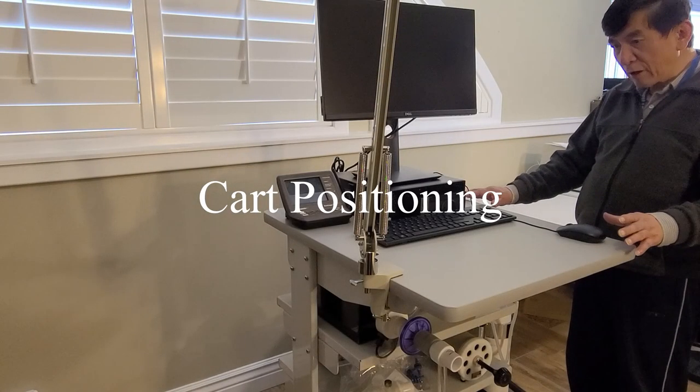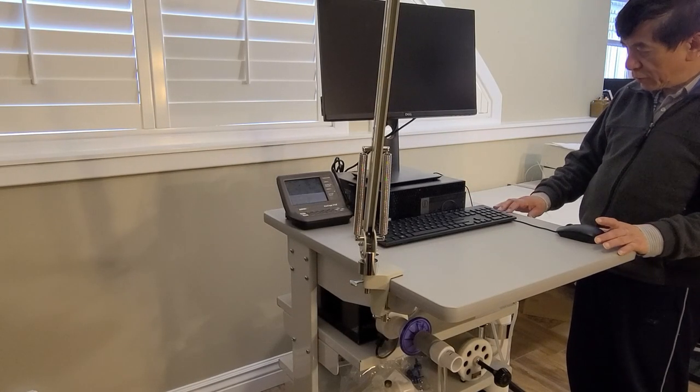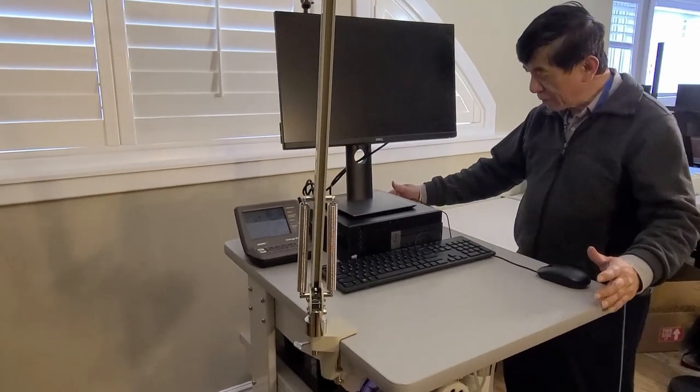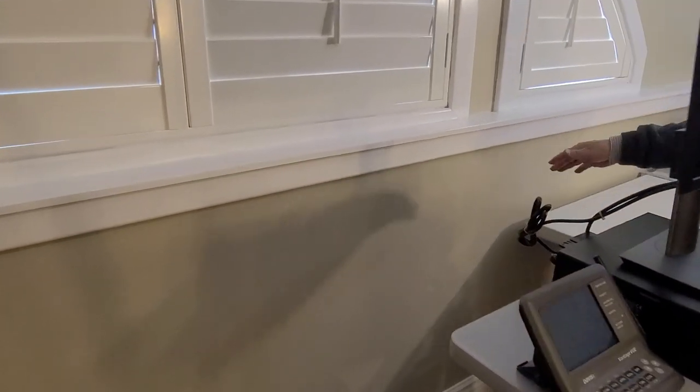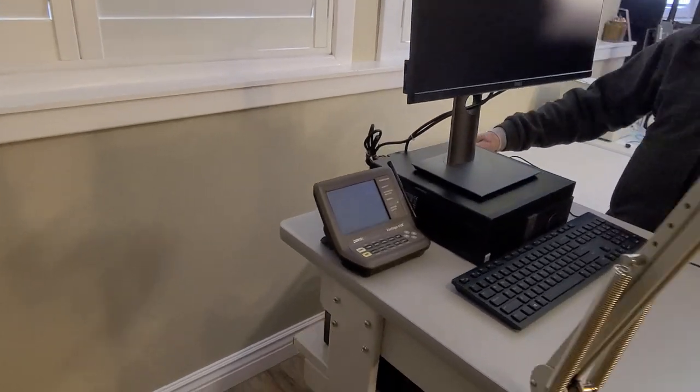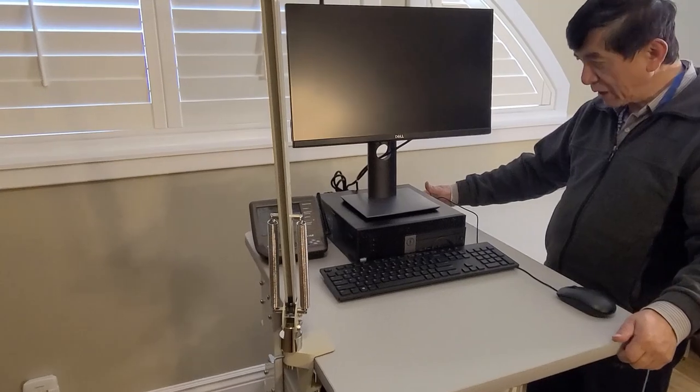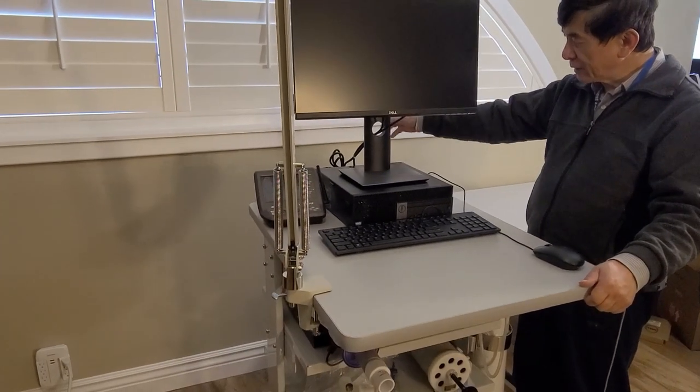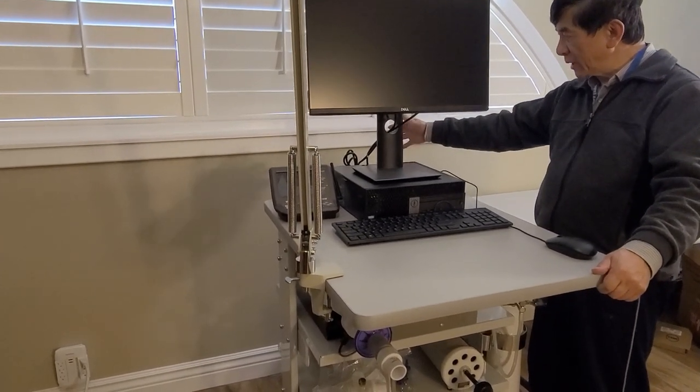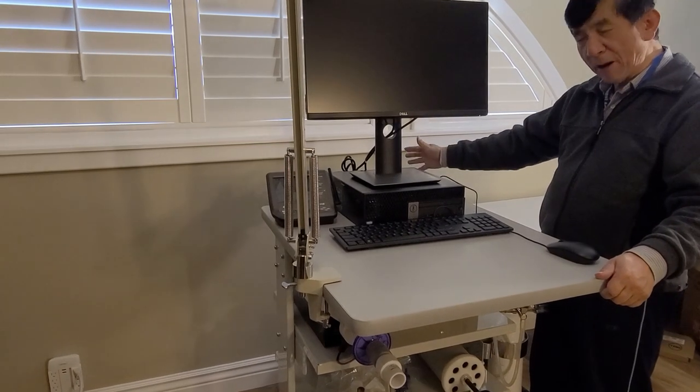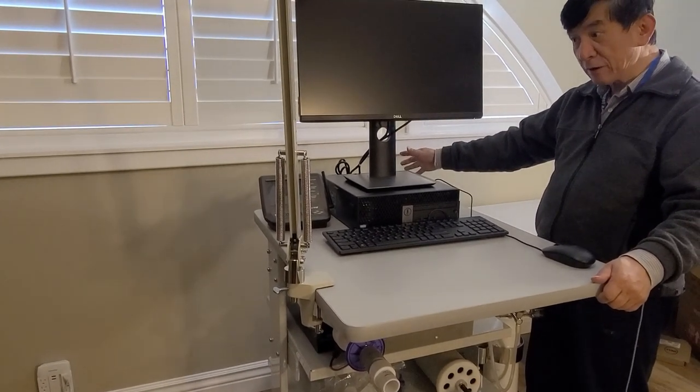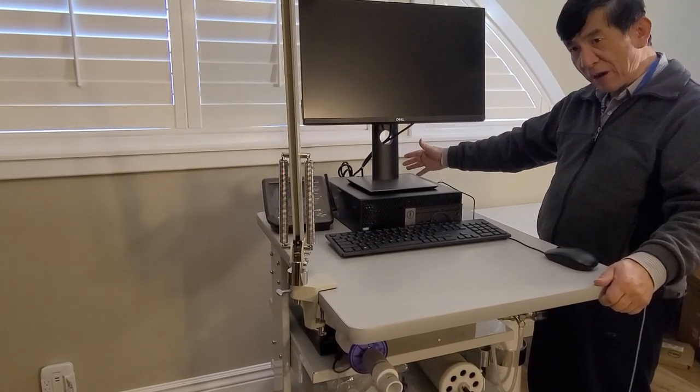The position of the cart. You don't want the cart back side too close to the wall, at least one foot. More is better. Because the spiral gas will be accumulating on the back side of the analyzer if you are too close to the back side.